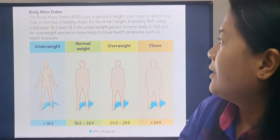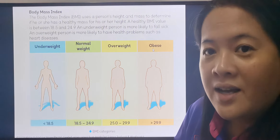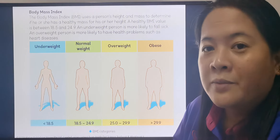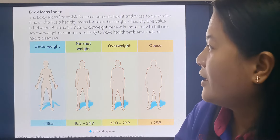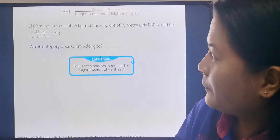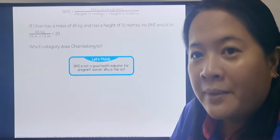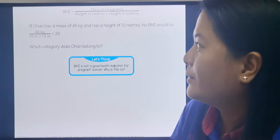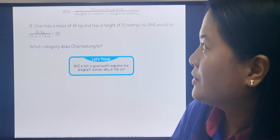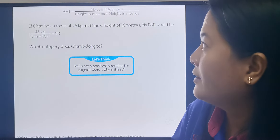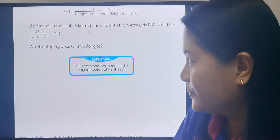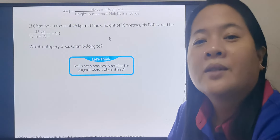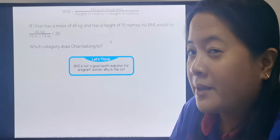So if you are overweight and obese, as we discussed last week, you are most likely to have health problems or heart problems when you grow older. This is the formula for how to compute BMI. I've shown you videos about how to compute your own BMI — it's your mass in kilograms divided by your height multiplied by your height in meters. I hope you understood how to get and compute your own BMI.